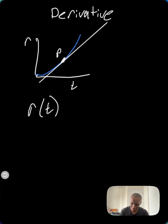So that's the derivative, and that is also equal to dr over dt. So derivative is just rate of change.